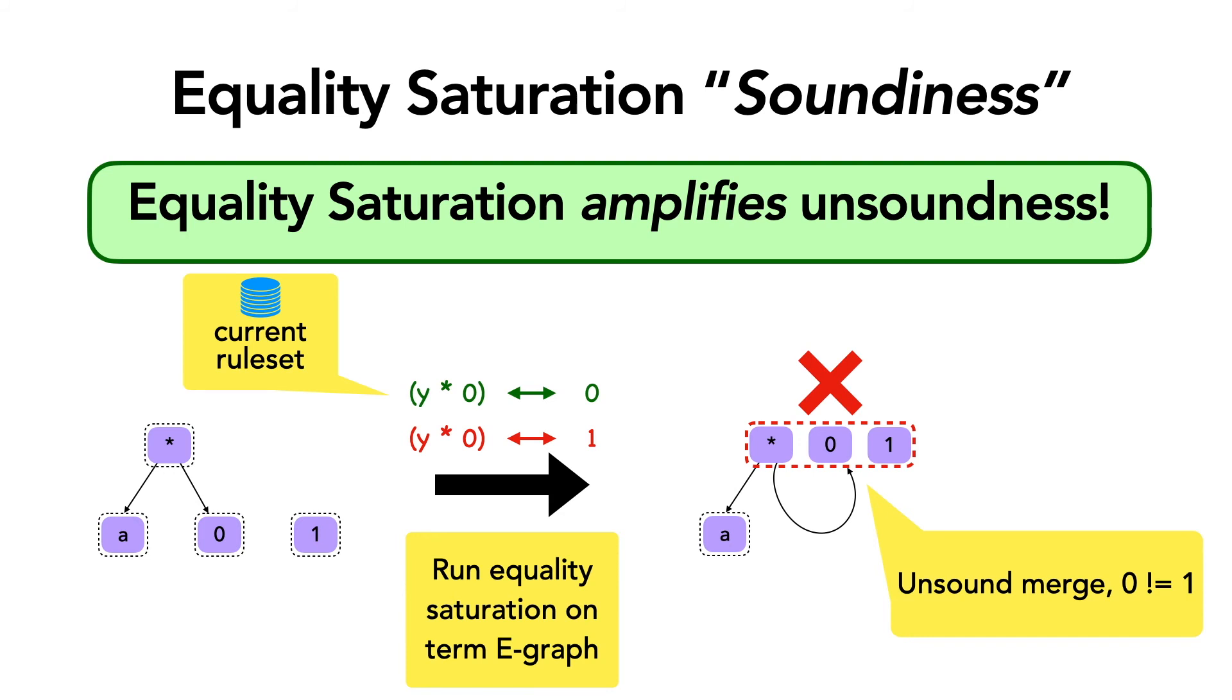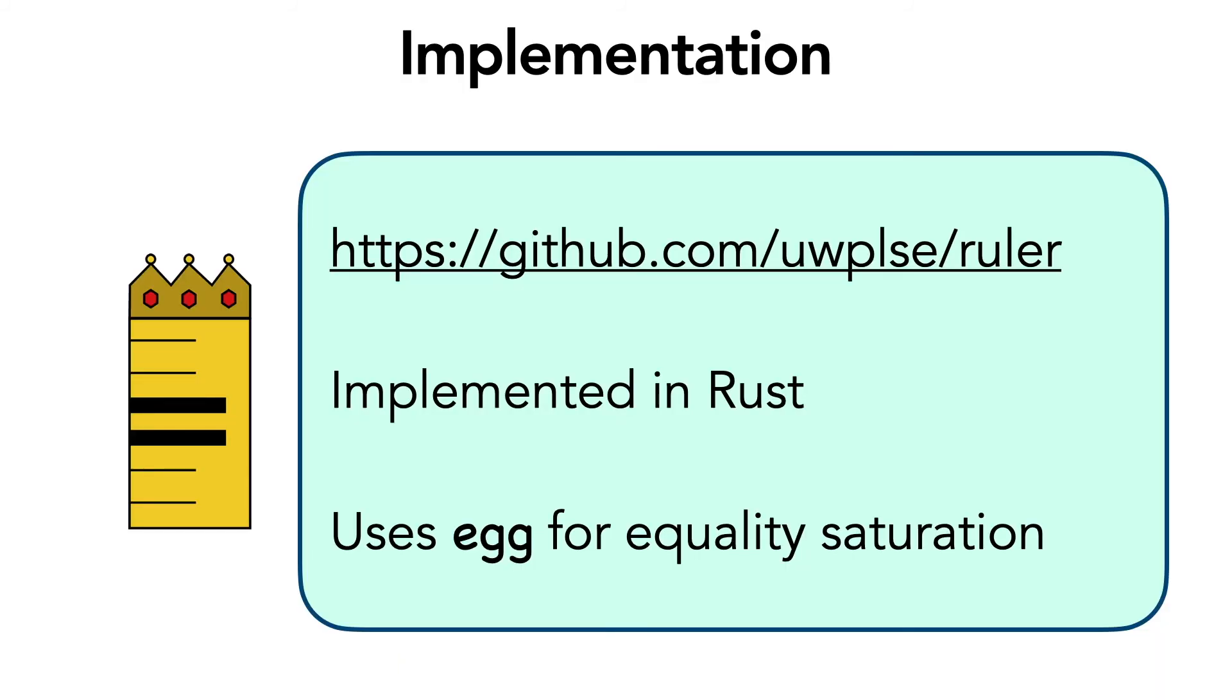This is somewhat analogous to proving false in a theorem prover and we think that this feature can be further exploited for building or debugging equality saturation based tools. So that's all I have to say about Ruler's core technique. Ruler is open source and it is implemented in Rust and uses the egg equality saturation library. Now I would like to discuss some of our results.